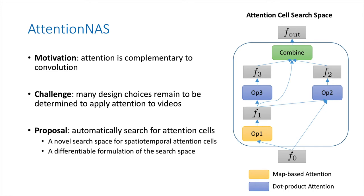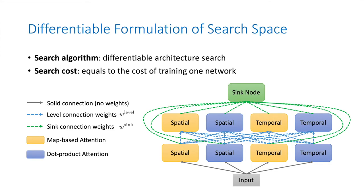Towards a principled way of using attention, we propose to automatically search for attention cells in a data-driven manner. More specifically, we propose a novel search space for spatial temporal attention cells. We also develop a differentiable formulation of the search space, which allows us to search for attention cells using differentiable architecture search.